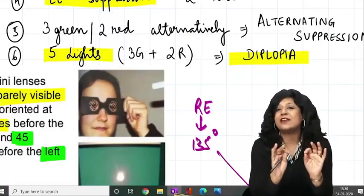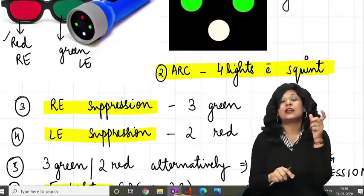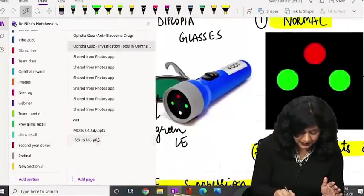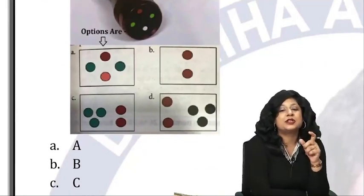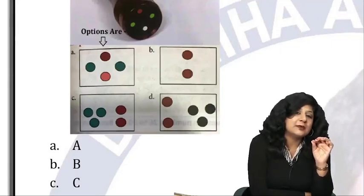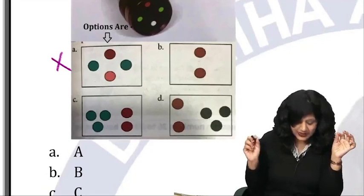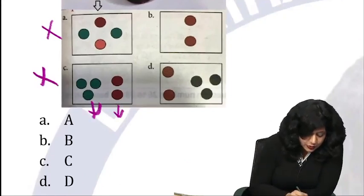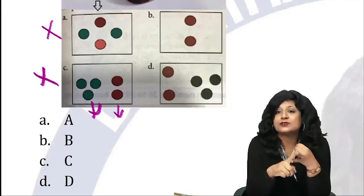You should be very clear about the Worth Four Dot Test — what is normal, what is abnormal, what are the different possibilities, what are diplopia goggles, and how a normal person sees the lights. Now let's go back to the question and look at the options. The first option shows absolutely normal findings — one red, two green, and one white. He will not see this because he has esotropia, so we can rule this out. Another option shows two red and three green — that's diplopia, which he isn't complaining of.